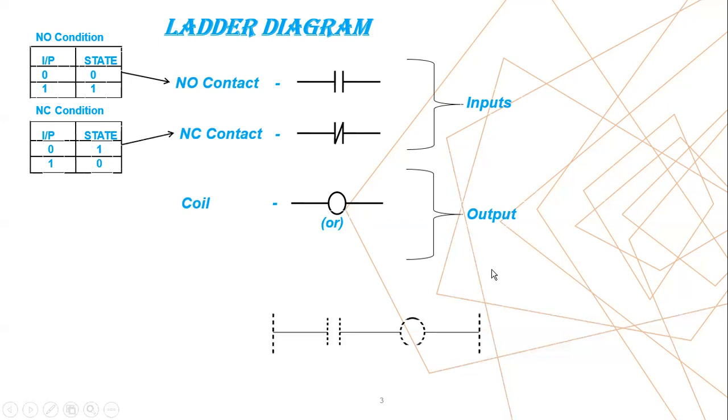So let's see in the program how to use this symbol. In ladder diagram, always your programming starts like this: you will have a left rail and right rail. You can see, in the left side one vertical line is there - that will be the starting point of your program.